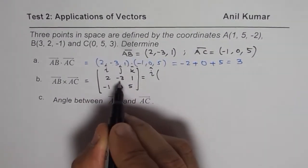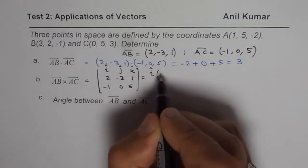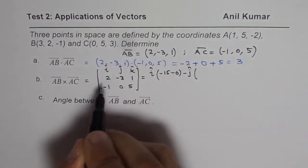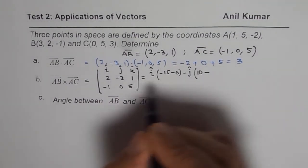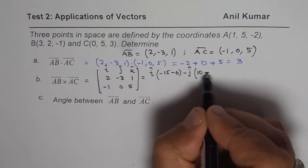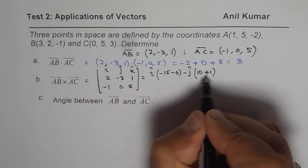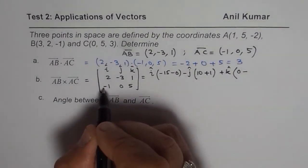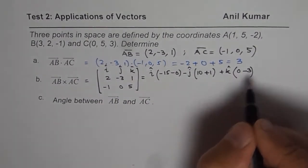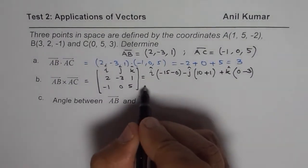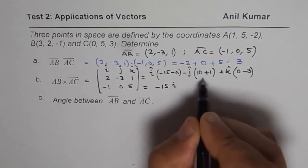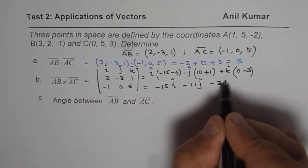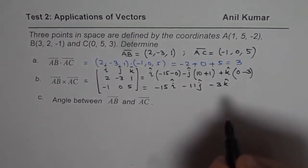So we can write this as, I, the unit vector, and cross product between these two. -3 times 5 is -15, take away 0 times 1, minus j. Within brackets, it is 2 times 5, 10, minus this, which is -1 times 1, which is plus 1. So it becomes minus of minus becomes plus 1, plus k, and then it's 2 times 0, which is 0, minus this, which is plus 3. So let me just simplify this. So we have -15i, j will be -11j, and -3k. So the cross product between these is as shown here.